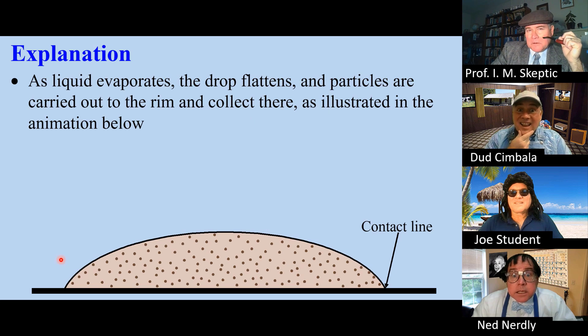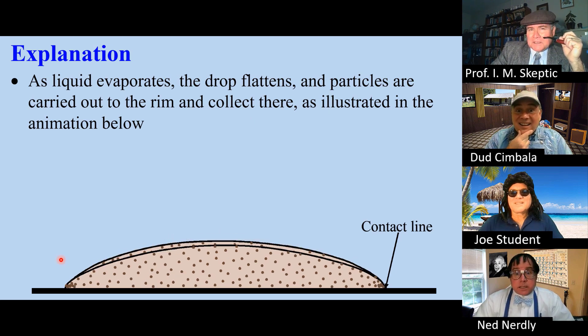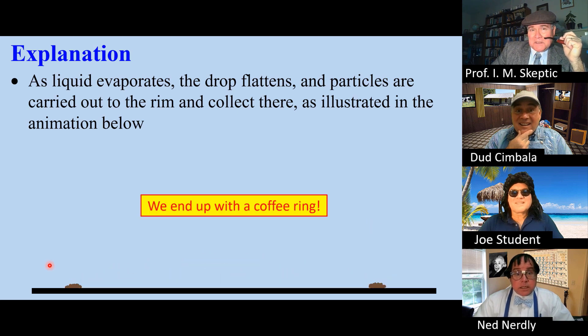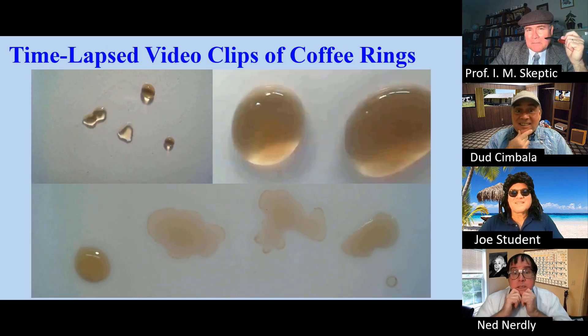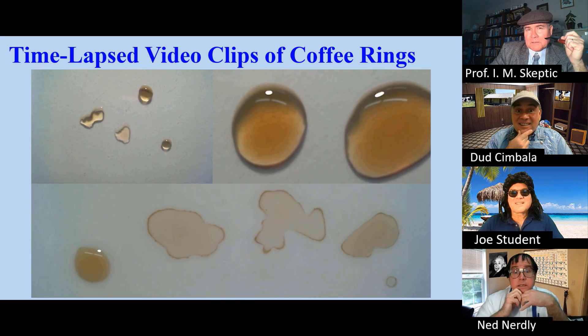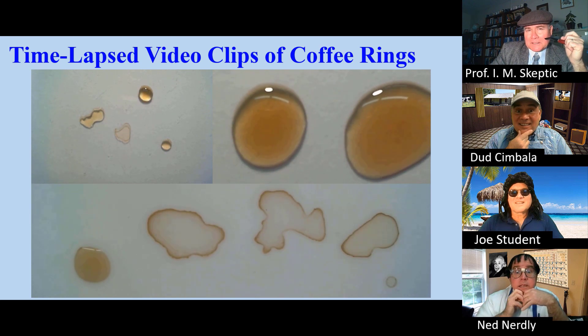As the liquid evaporates, the drop flattens and the particles collect near the rim. As illustrated in this animation, in the end we have a coffee ring. Here are some time-lapsed video clips of coffee rings as they form.